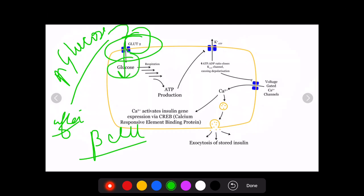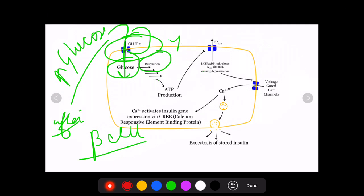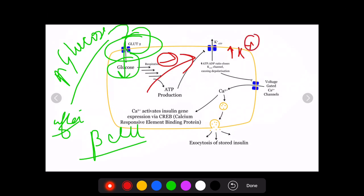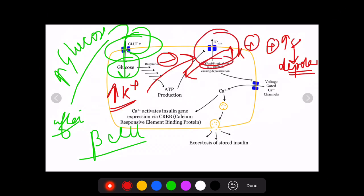This glucose enters respiration and glycolysis, which results in formation of ATP. This increased ATP production inhibits the potassium channels. Inhibition of the potassium channels results in increased potassium inside the cell. Whenever a positive ion inside the cell increases, this results in depolarization of the cell.